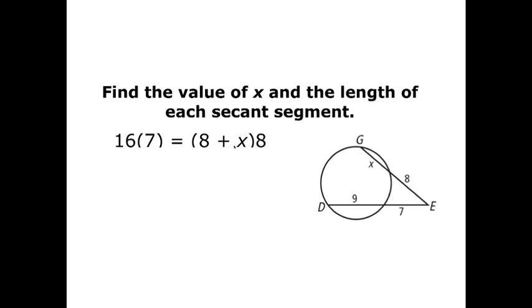So I'll use the distributive property here, 8 times 8 is 64, and 8 times x is 8x. And then I'll have my 7 times 16, and so I've got 70 plus 42, or 112. So 112 equals 64 plus 8x, subtract the 64, and divide by 8. So we have that x is equal to 6.